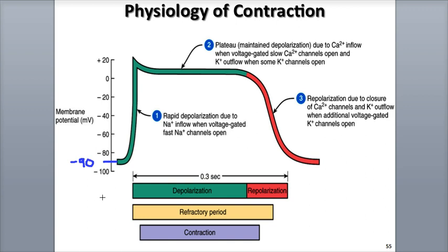When the action potential reaches a contractile fiber, its membrane becomes depolarized. That means its charge becomes more positive and increases to threshold level, which quickly opens its voltage-gated fast sodium ion channels, allowing sodium ions to flow into the fiber.